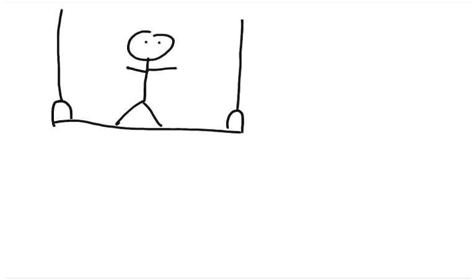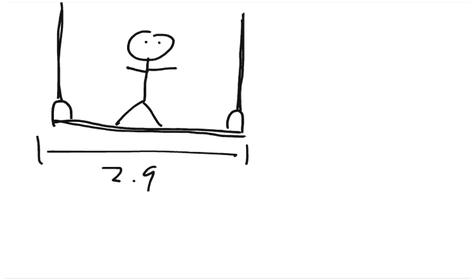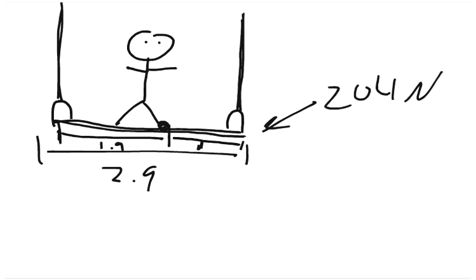So what we have here is our scaffold, and there are ropes supporting it vertically, straight up and down at each end. This thing is 2.9 meters long, and then we have a man standing 1.9 meters from this edge, with all his weight on that foot. If the whole thing's 2.9, that means there's 1 meter left. So 1 plus 1.9 equals 2.9. Our scaffolding weighs 204 newtons, and our man weighs 710 newtons.